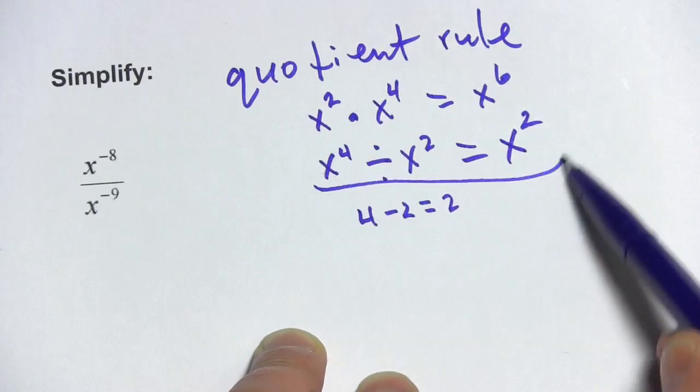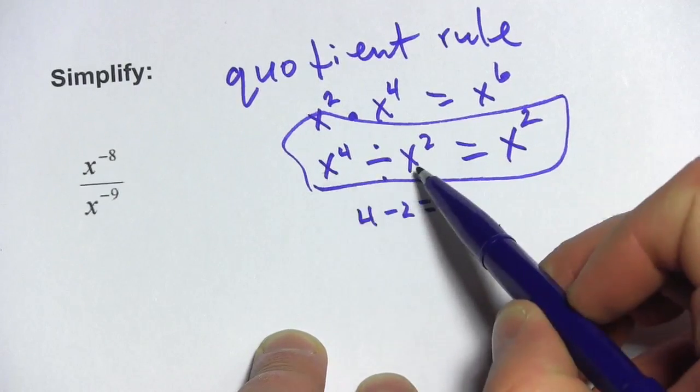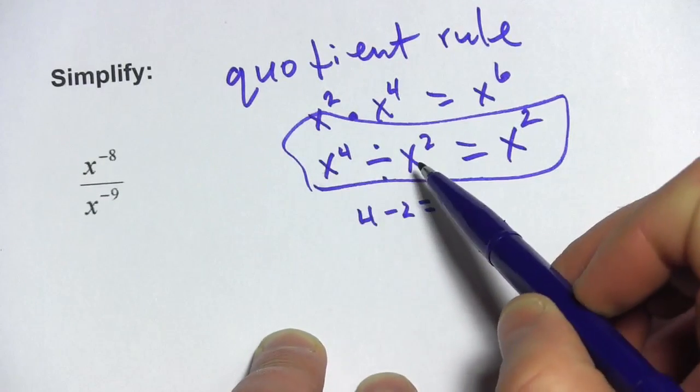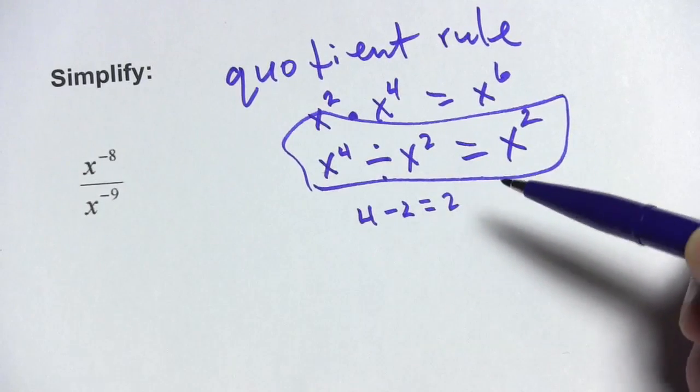And this is the quotient rule, you just subtract the exponents if you're dividing. Remember the bases always have to be the same, I've got x and x for my bases. If you're dividing, you just subtract the exponents. So let's see how that works.